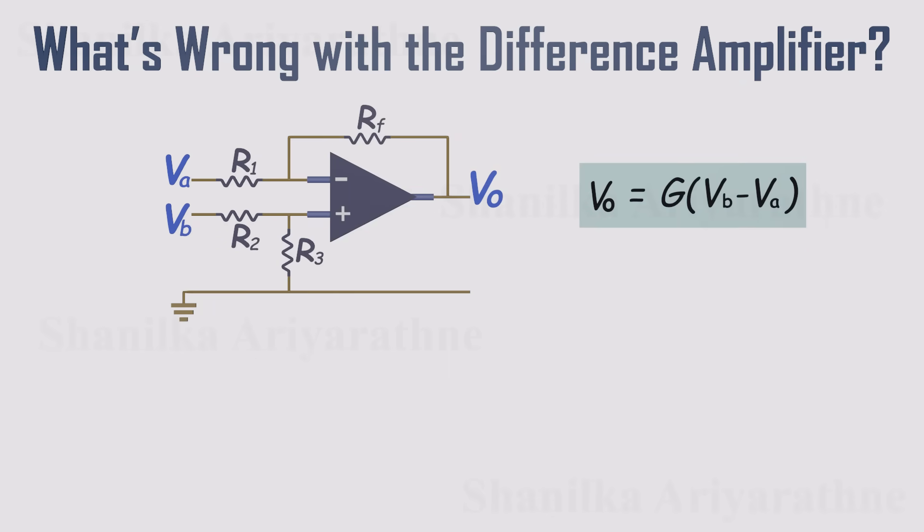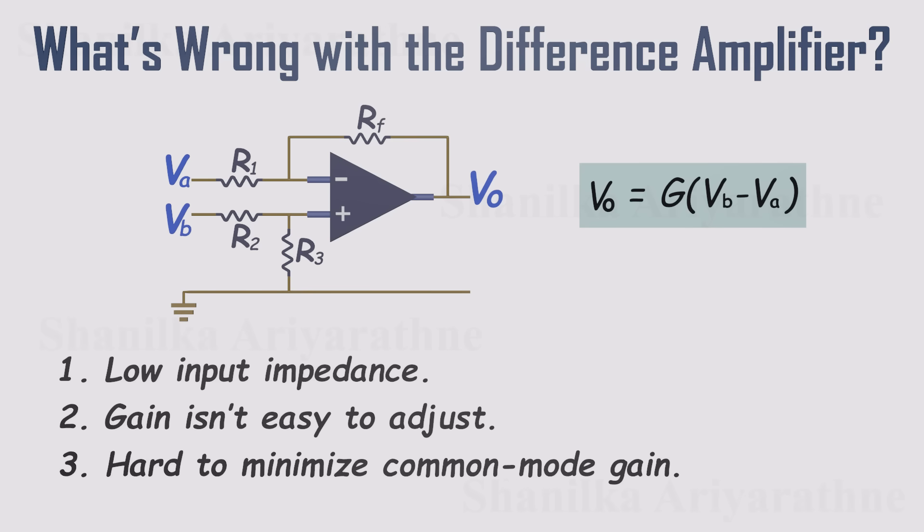The short answer is, the simple differential amplifier has some major drawbacks. Specifically, three of them. First, it has low input impedance. Second, the gain isn't easy to adjust. And third, it struggles to minimize the common mode gain. Let's go through these one by one.